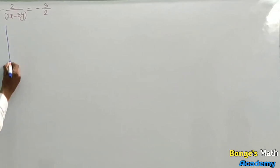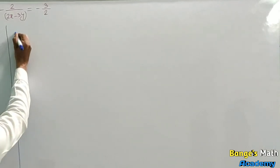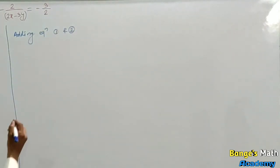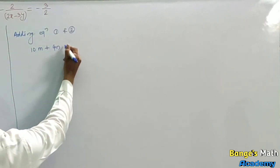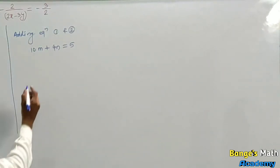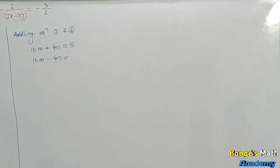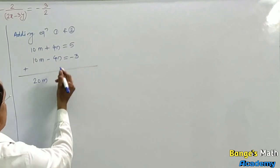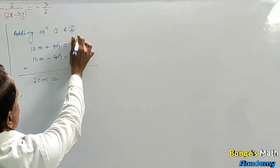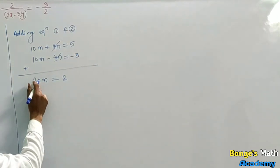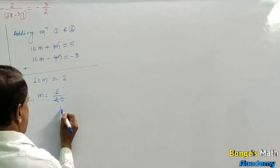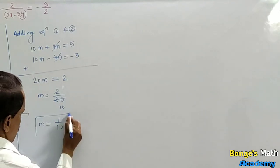Adding equations 1 and 2: equation 1 is 10m plus 4n equal to 5, equation 2 is 10m minus 4n equal to minus 3. Adding: 10m plus 10m gives 20m, and 4n minus 4n cancels, equal to 5 minus 3 equals 2. So 20m equals 2, giving m equal to 2 upon 20 equals 1 upon 10.